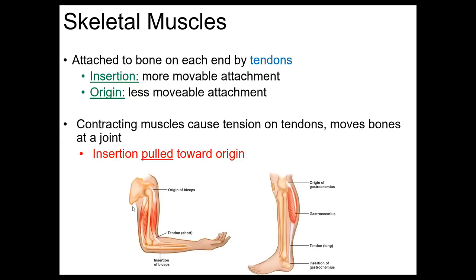Muscles are the organs of the muscular system. For example, here we have the biceps brachii. All muscles have an origin and an insertion. The origin is the less movable attachment and the insertion is the more movable attachment. When those muscle fibers shorten, they pull the insertion towards the origin — the insertion always moves towards the origin.